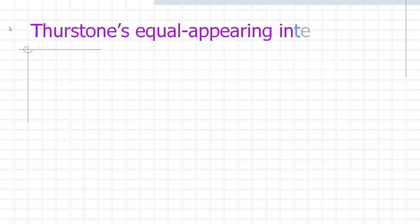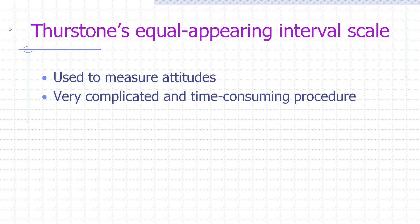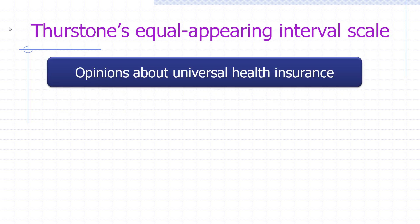We also have Thurstone's equal appearing interval scale. This one's a little complicated, but I'm going to break it down. It's used to generally measure attitudes, which could be why we don't see this a lot in social work research — it's mostly used in other social sciences like sociology. It's very complicated and time-consuming, which may also explain why it isn't used as much, but it has very good reliability.